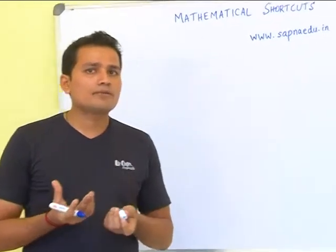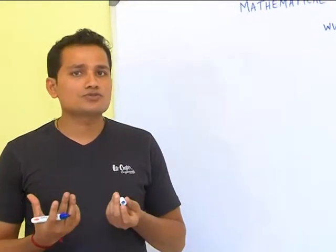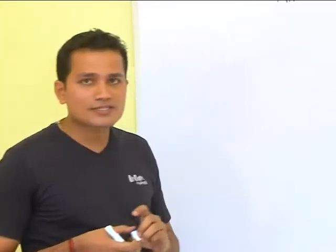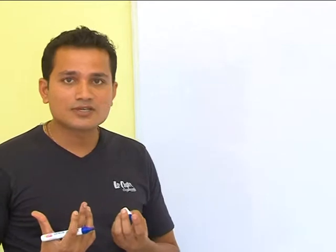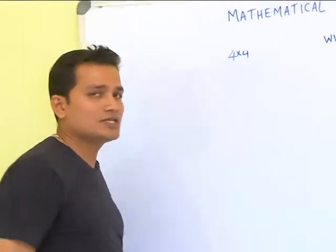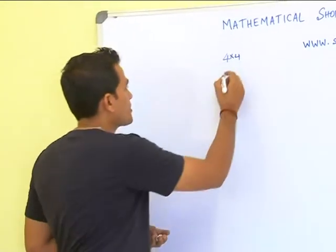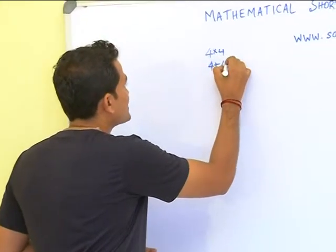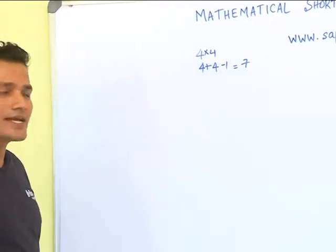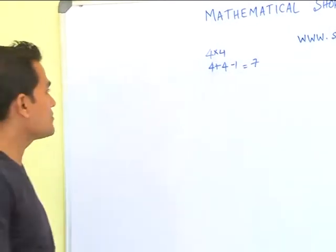You already remember, in a two cross two multiplication, the number of steps is three, and in a three cross three multiplication, the number of steps is five. You will see in a four cross four, this physical method of multiplication, the number of steps is four plus four minus one, seven. Let's explain the steps with this example.